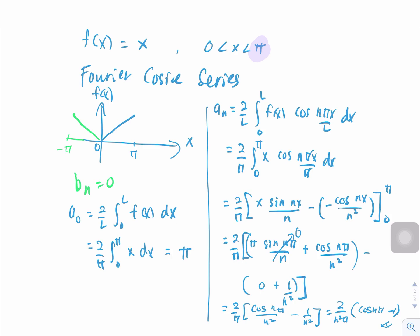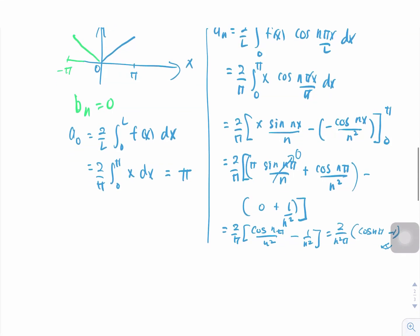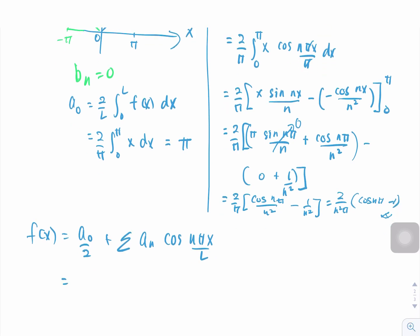Substituting back into the Fourier cosine series formula f(x) = a₀/2 plus the summation of aₙ cos(nπx/L), with a₀ = π and aₙ = 2(cos(nπ) − 1)/(n²π), the Fourier cosine series becomes π/2 plus the summation from n=1 to infinity of [2(cos(nπ) − 1)/(n²π)] times cos(nx).